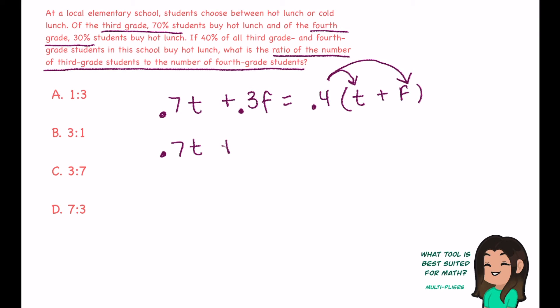If I distribute, then I get rid of this parentheses and it's a little bit easier to work with. So 0.7 third graders plus 0.3 fourth graders should give me whatever 0.4 third graders is plus 0.4 fourth graders. Much better. Let me see if I can get the variables isolated to both sides.